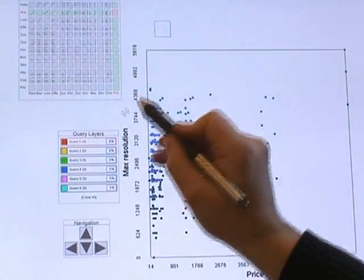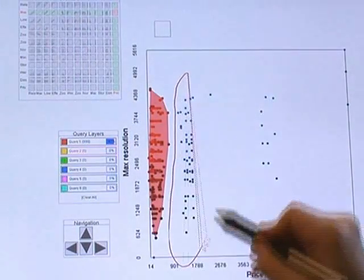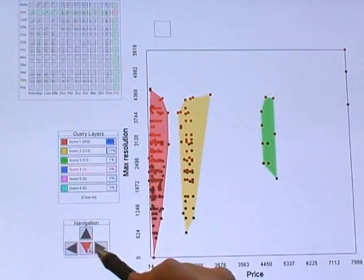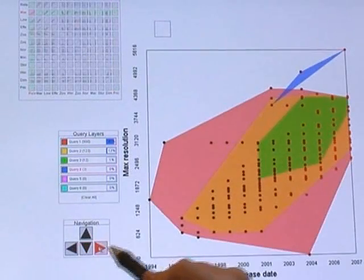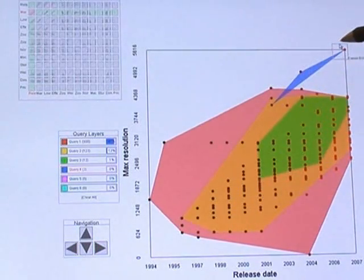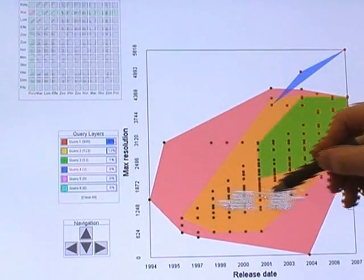He builds queries for the four different price ranges of cameras. He then moves right in the scatterplot matrix to study the release year of these four groups of cameras. Using the eccentric label lens, he is able to drill down into the dataset to see the names of the cameras.